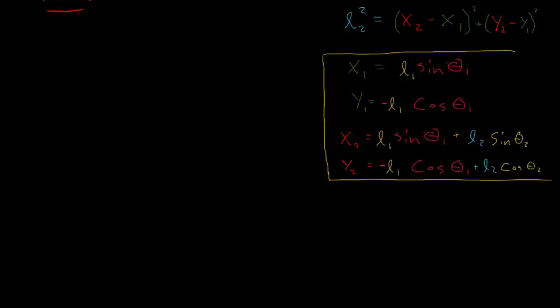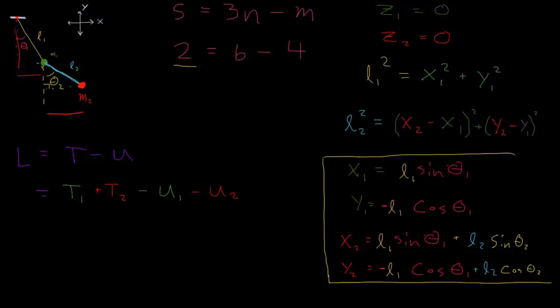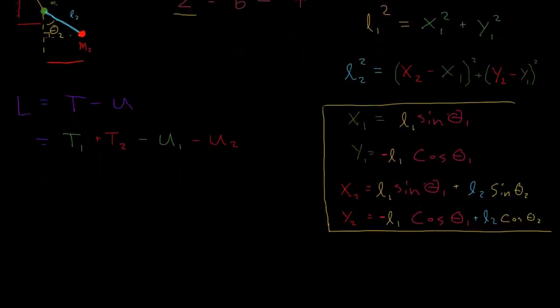So the Lagrangian L equals t minus u, or we could say that it equals t1 plus t2 minus u1 minus u2. We can write down a term based on each of these pendulum bobs or each of these objects or points separately.